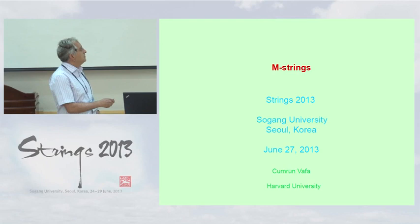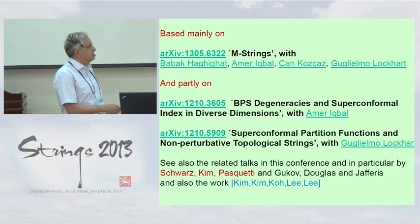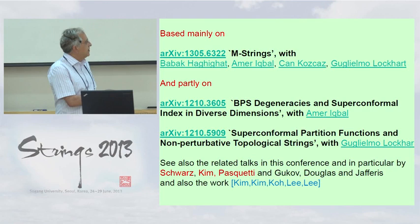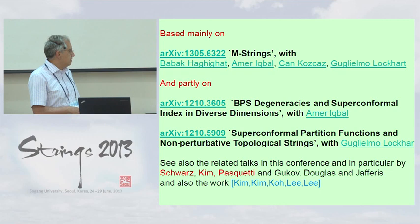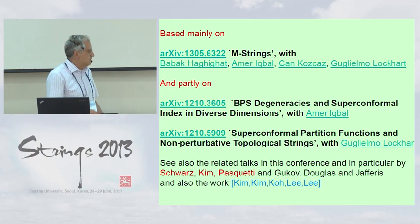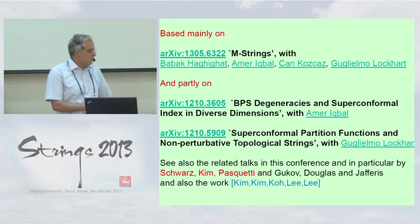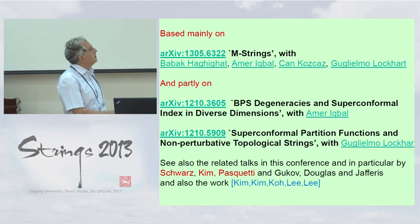I would like to talk about some work I've been doing recently, in particular in collaboration with Harigat, Iqbal, Kozchaz, and my student Lockhart, and it also draws on some aspects of previous works. It's also related to a number of talks in the conference related to two-comma-zero theory — more directly related to the talks by John and by Siok and Saraf tomorrow — and somewhat tangentially to other talks. Also related to some work and ideas explored a while back by this Korean group.